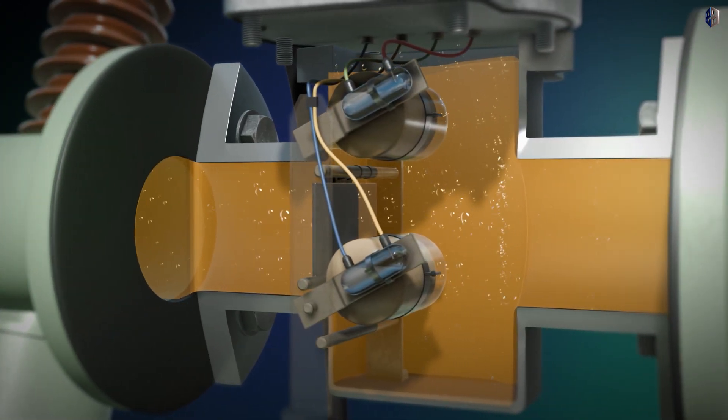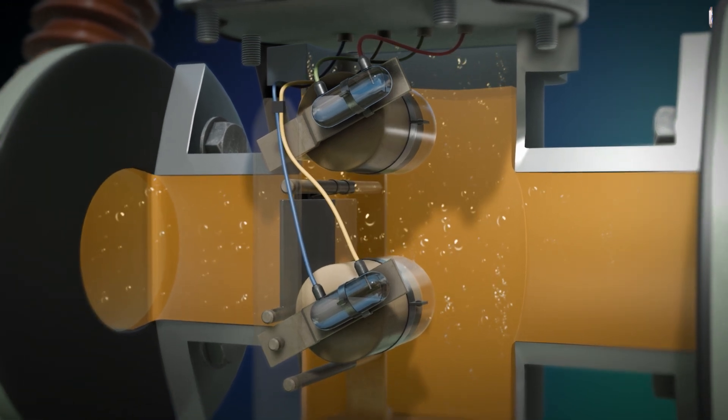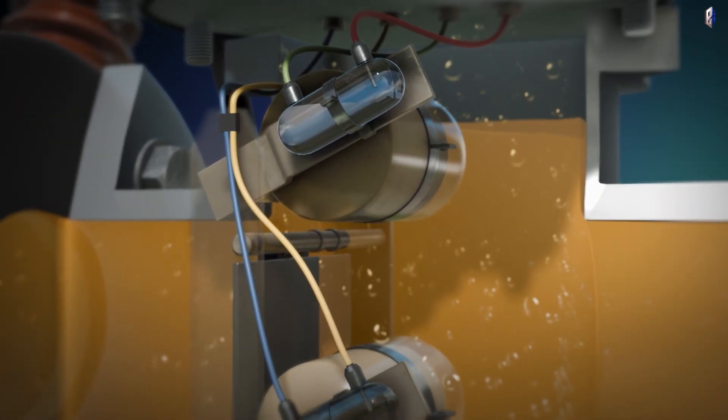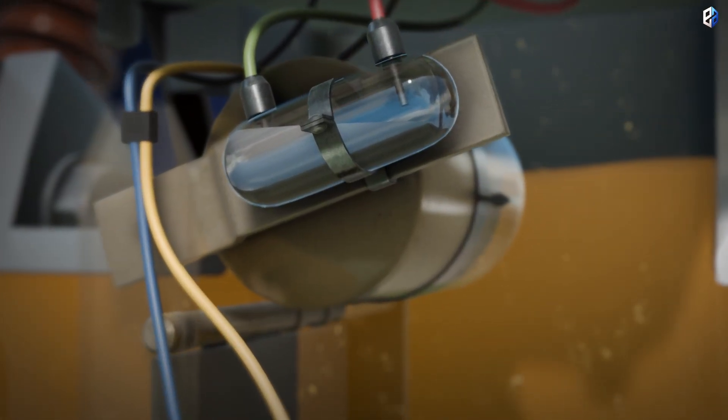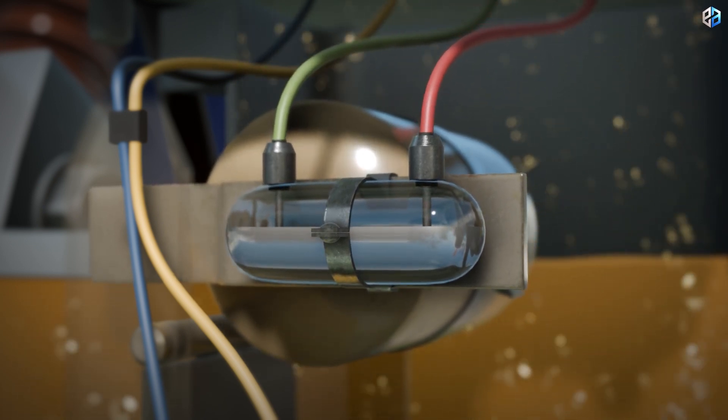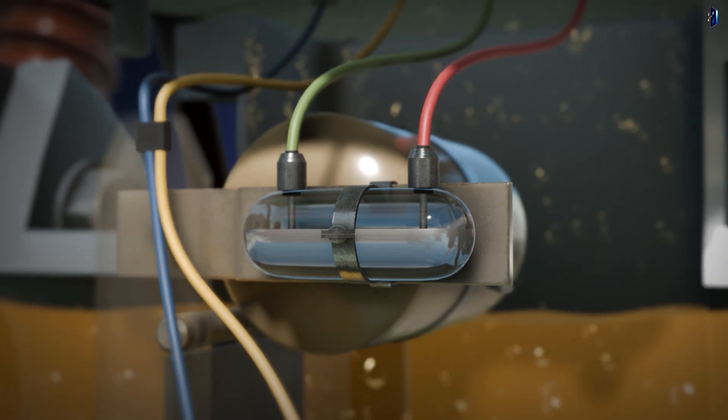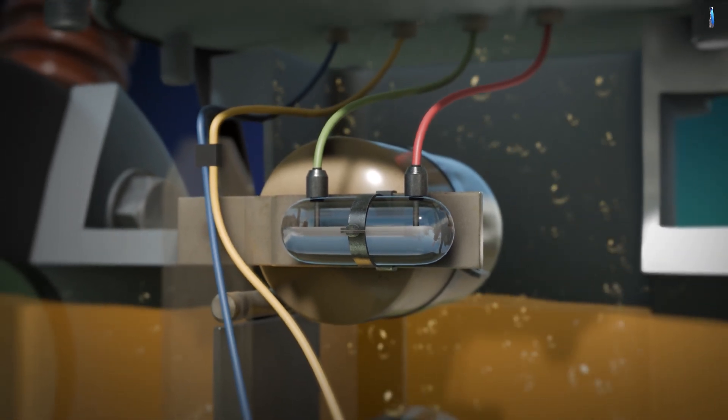If the amount of gas rises above a certain and previously defined level, the upper float lowers and a contact is closed. This is the first warning signal, an indication of a possible internal fault. As a rule, a warning message is sent to the operator of the system.